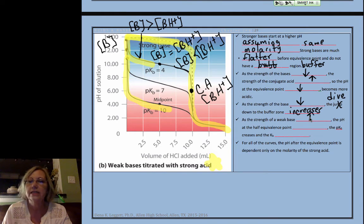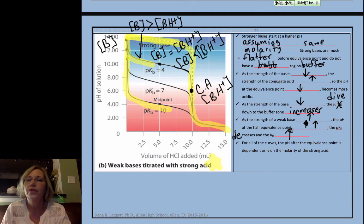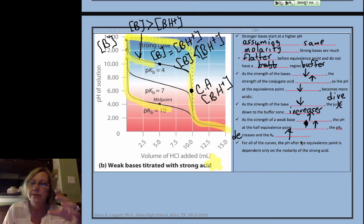We're only talking about the weak bases in terms of plummeting to the buffer zone. As the strength of the weak base increases, the pH at the half-equivalence point increases, the pKB decreases. The pKB decreases. And the KB increases. I know that seems a little backwards, but that's because we're having to jump from pOH back to pH.